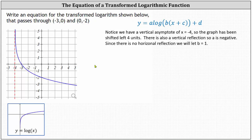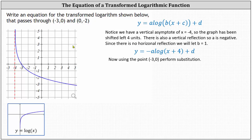This gives us the equation y equals negative a times common log of the quantity x plus four, plus d. From here, we'll use the point negative three comma zero and perform substitution. We substitute zero for y and negative three for x.